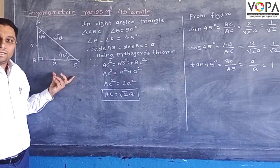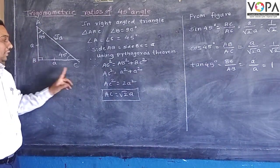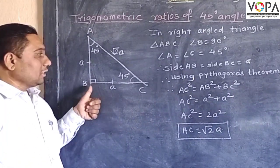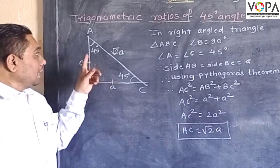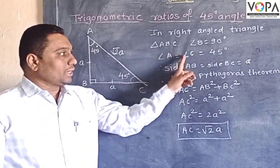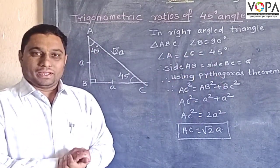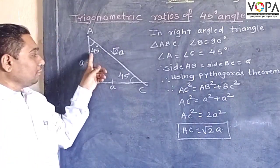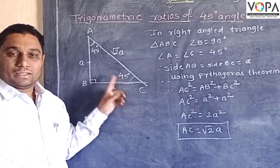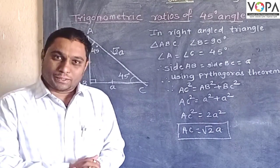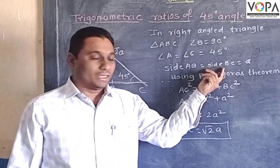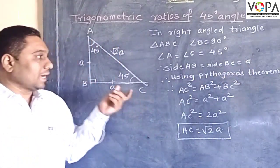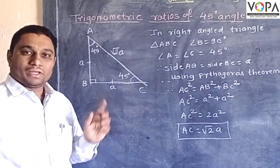Let us see here is the right-angled triangle ABC where angle B is 90 degrees, and angles A and C are both 45 degrees. So if both angles are the same, then the sides opposite to both angles are also the same. Hence side AB is equal to side BC. Let us take side AB and BC which is equal to A.